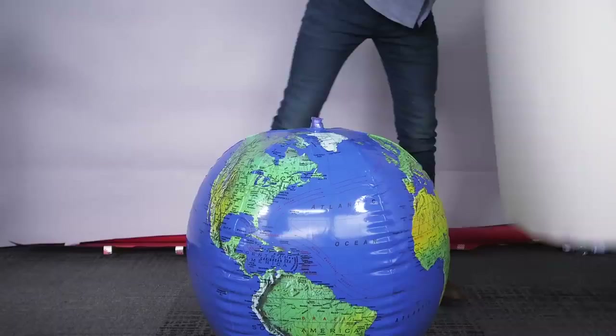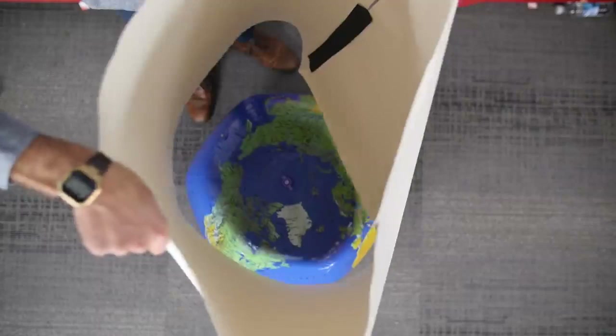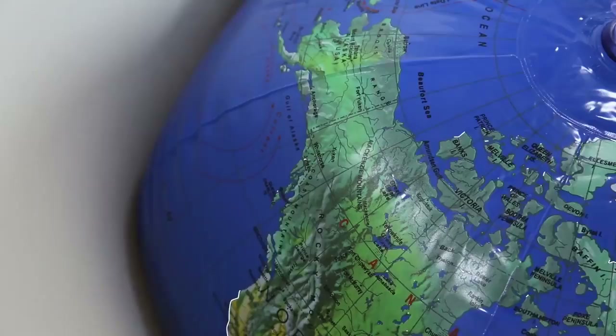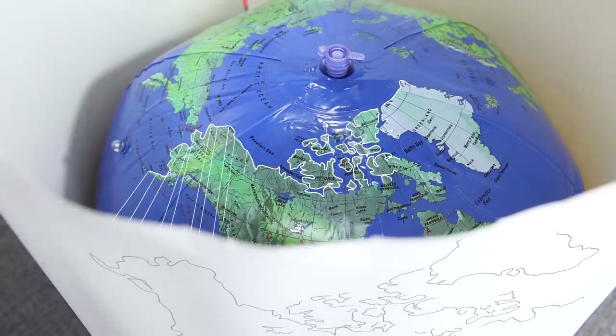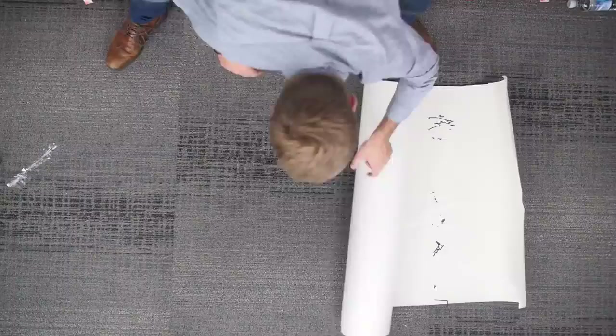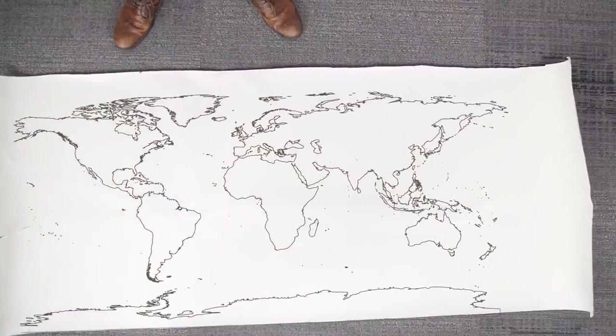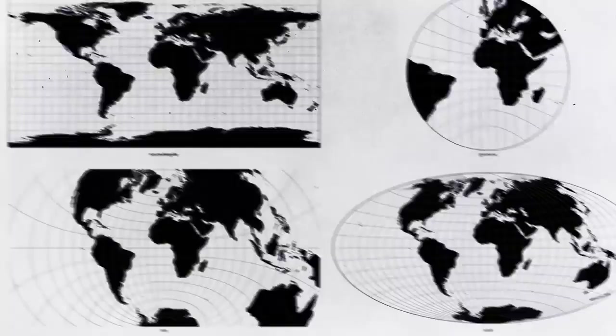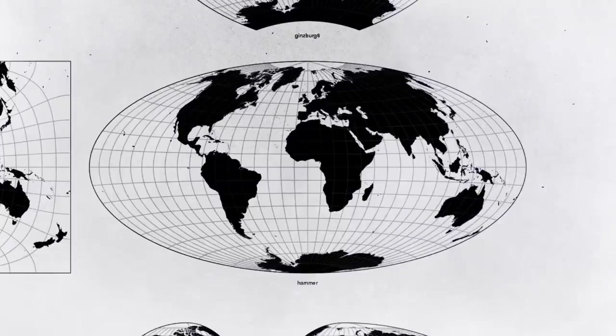Popular rectangular maps use a cylindrical projection. Imagine putting a theoretical cylinder over the globe and projecting each of the points of the sphere onto the cylinder surface. Unroll the cylinder and you have a flat rectangular map. But you could also project the globe onto other objects, and the math used by map makers to project the globe will affect the way the map looks once it's all flattened out.